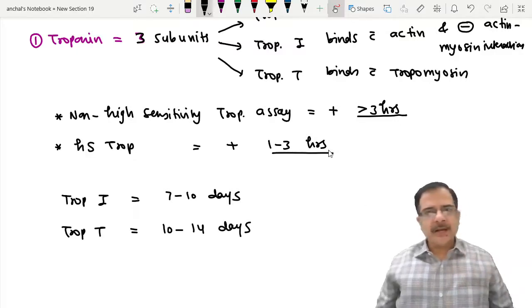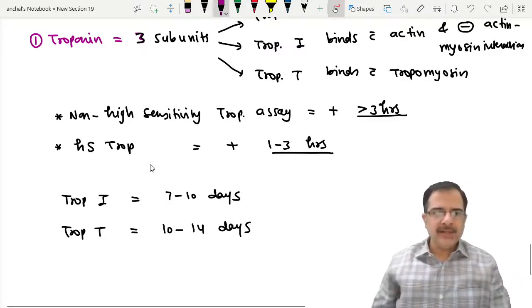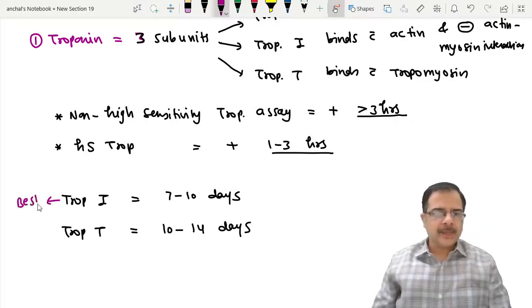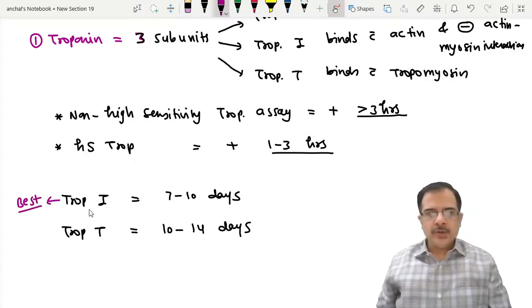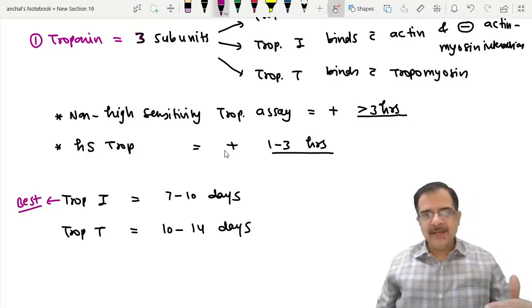After symptom onset, out of these two, the best is troponin I. It is best because it is not affected by renal failure. In renal failure, troponin T can be elevated due to decreased excretion.